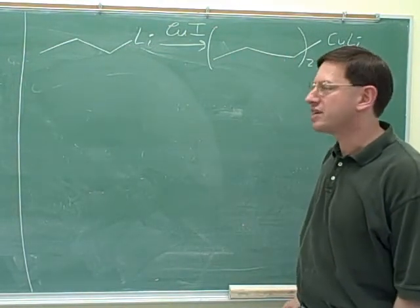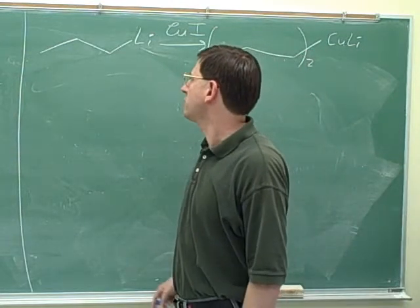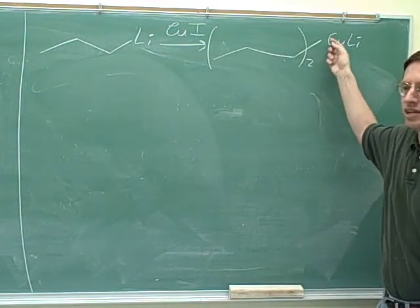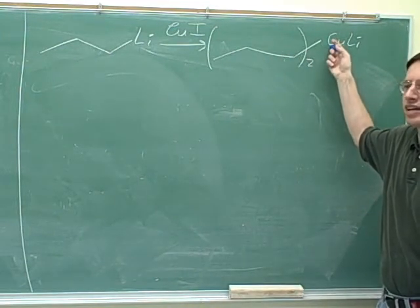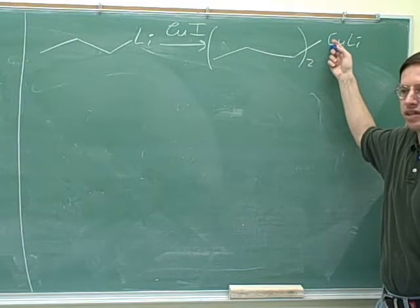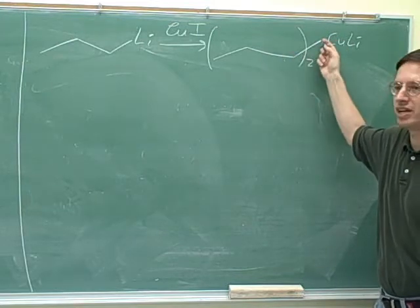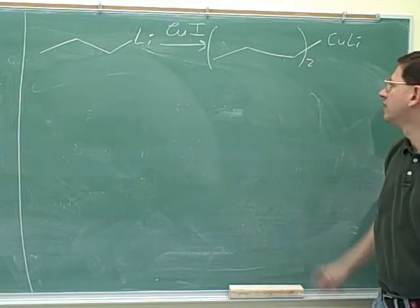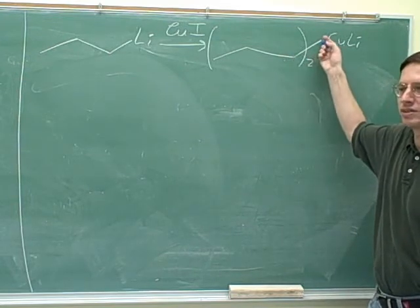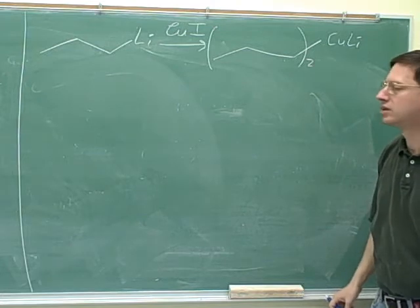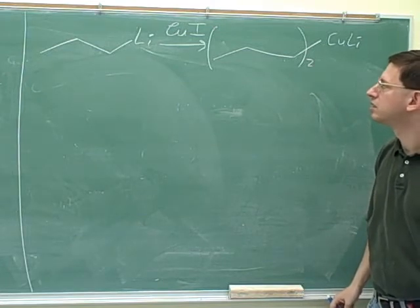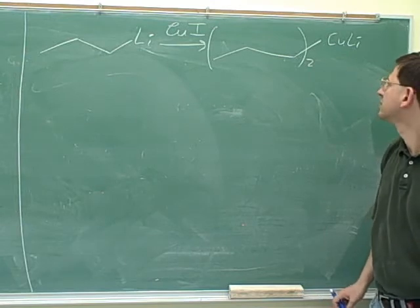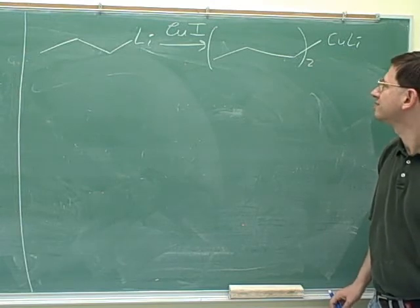Then you put in your copper iodide, and then you get this. One thing you should know is that through methods we won't talk about, even though we start with one of these carbon chains on the lithium, we end up with two identical chains on the copper. This is just a minor technicality. It's not going to affect how we use this. Which of these is the nucleophilic carbon? That's the important thing. The one that's attached to the copper. So it's like Grignard reagents in that the copper goes between the lithium and the carbon. It's kind of an insertion reaction. Except the iodide goes away, and we get two alkyls.